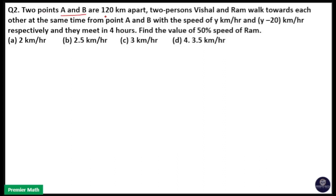Two points A and B are 120 km apart. Two persons Vishal and Ram walk towards each other at the same time from point A and B with a speed of Y km per hour and Y minus 20 km per hour. They meet in 4 hours. Find the value of 50% speed of Ram.